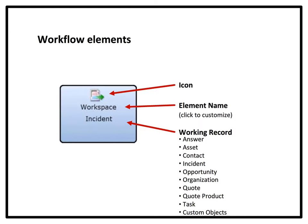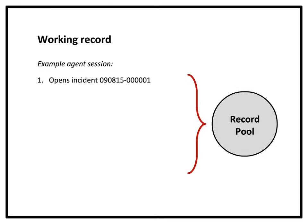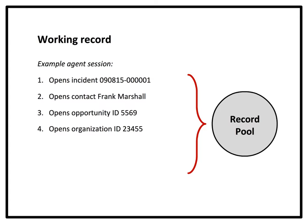The bottom label displays the working record. The term working record is used to describe the particular record that will be acted upon by the element, such as an incident, contact, opportunity, or task. When a staff member opens a record in a desktop workflow, it is loaded into a memory space called the record pool. When additional records are opened in the same workflow session, those records are held in the same common record pool. If more than one record of the same type is open in the same record pool, the working record is used to specify which record will be acted upon in an element.